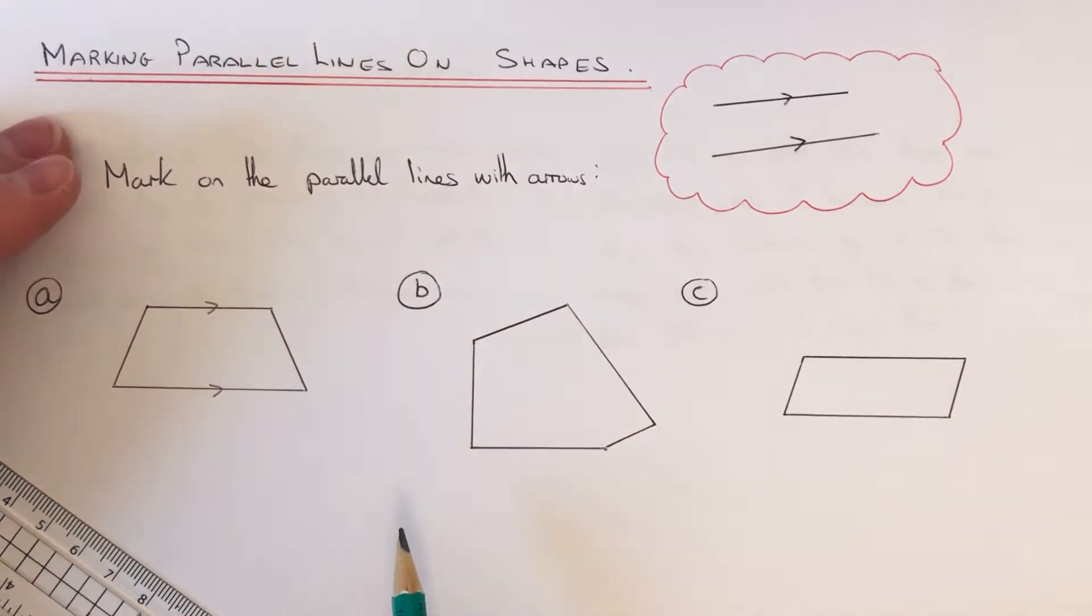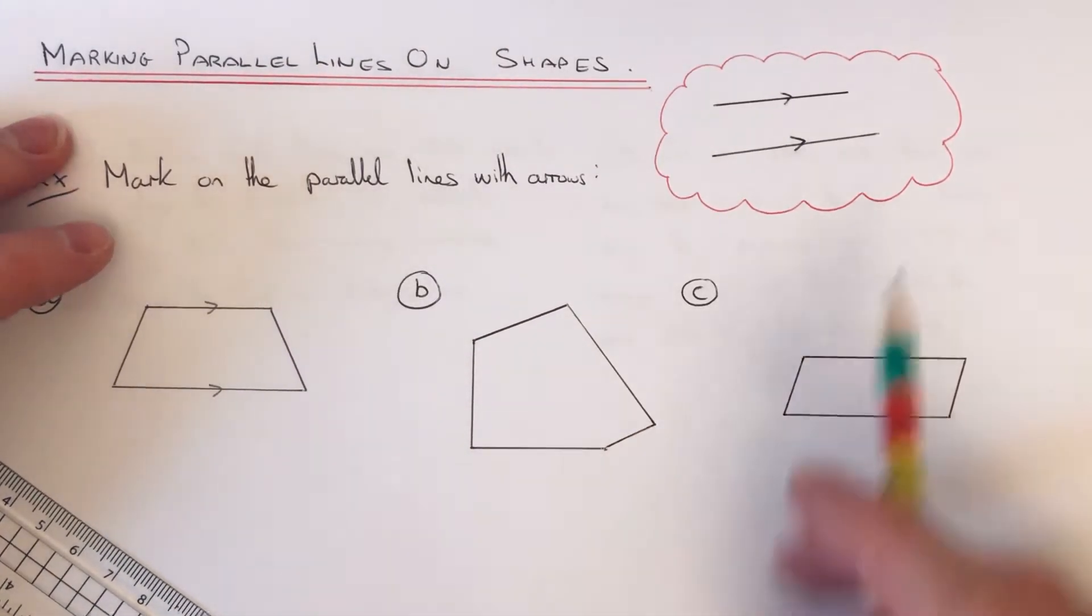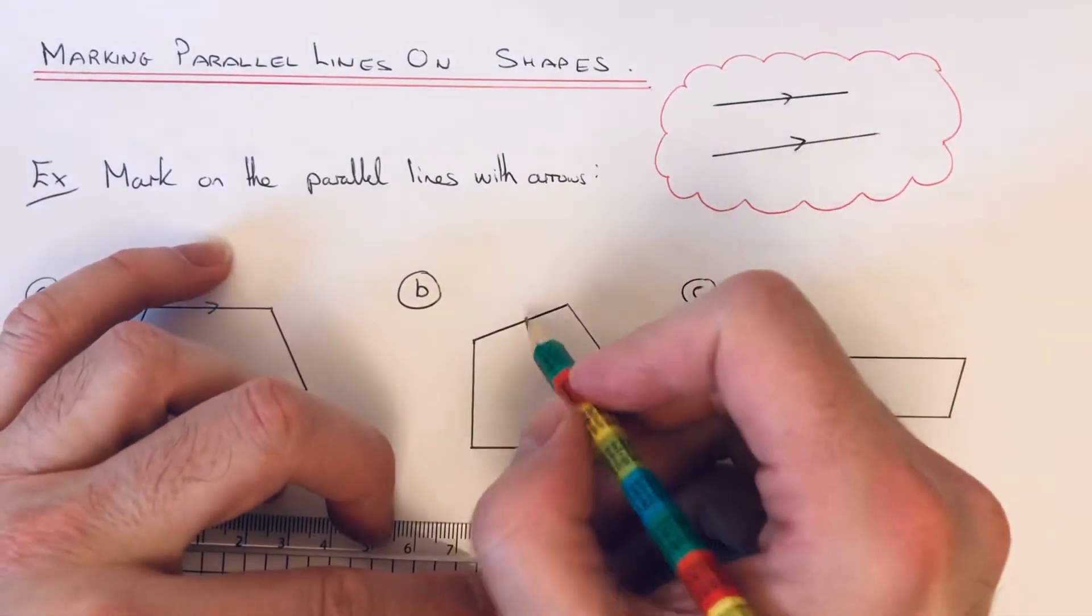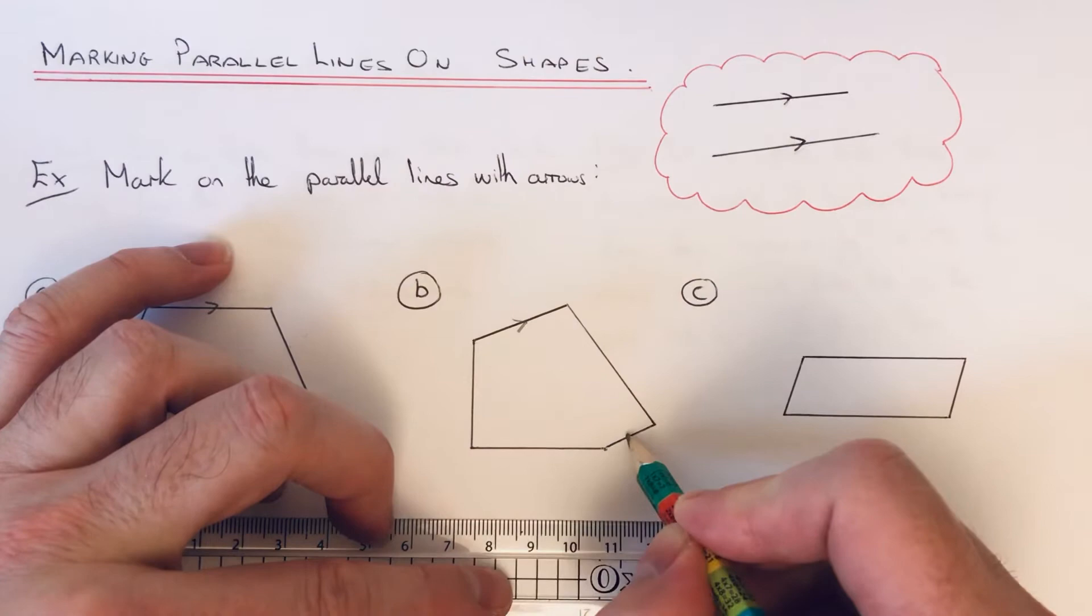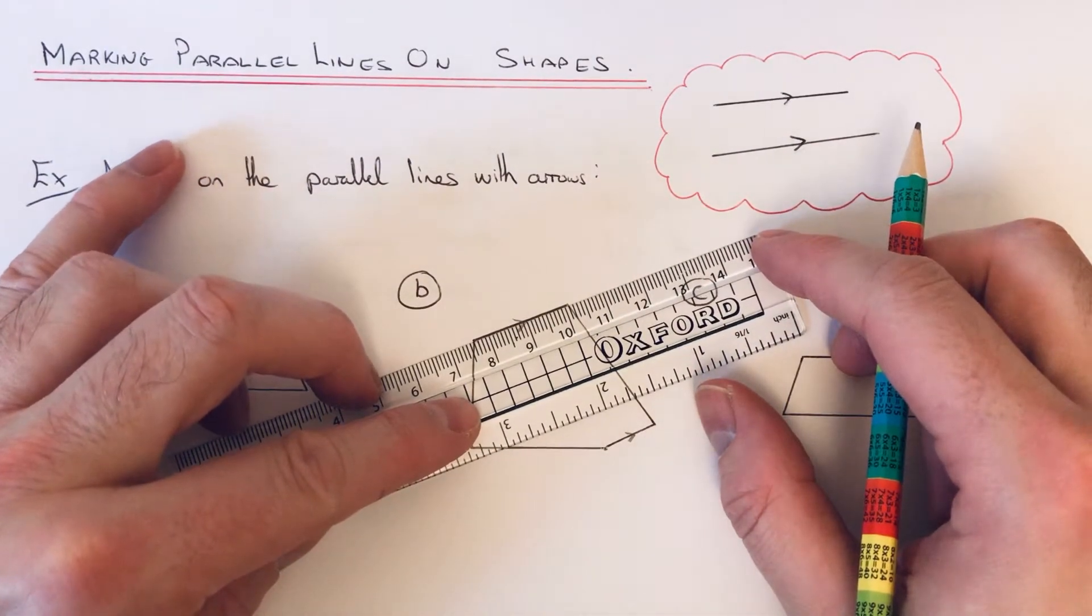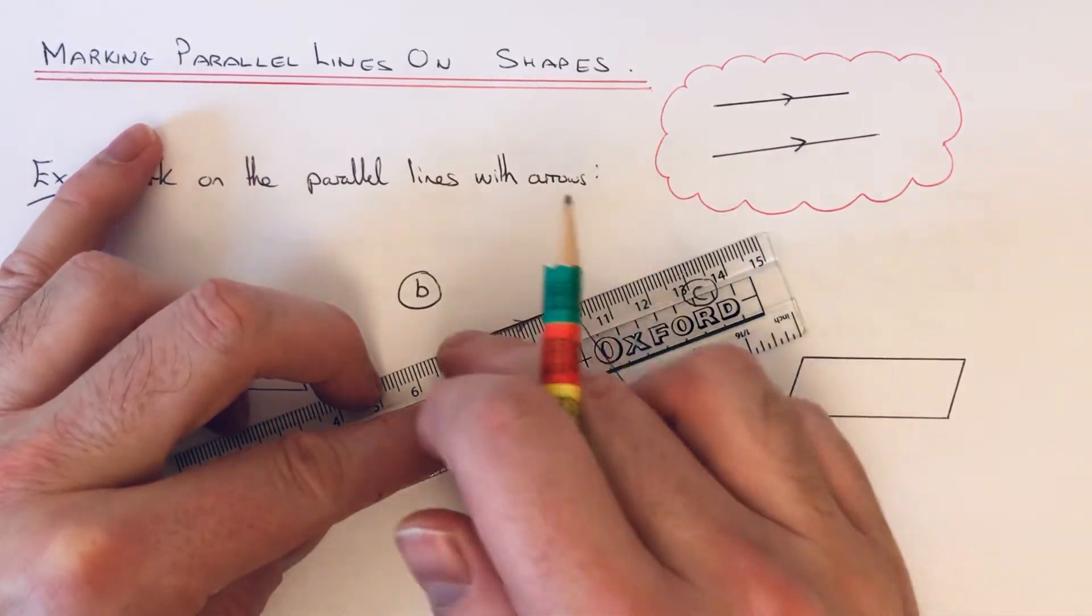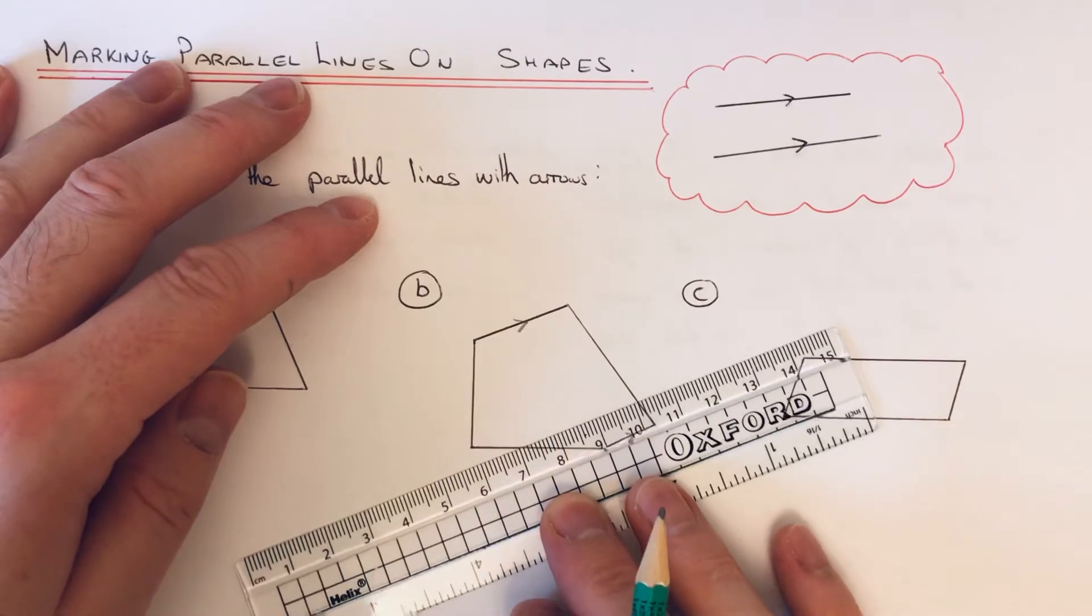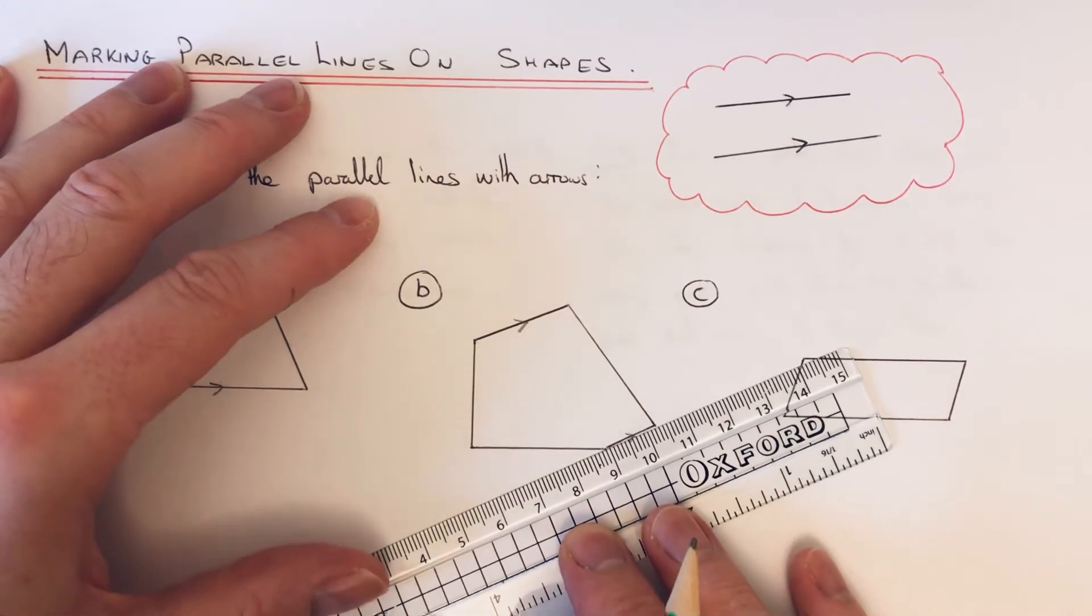This time we have a pentagon. So again, the lines that we're looking for, the parallel lines, are this one and this one. So if I just show you why: if you put your ruler against that line, so it's heading that way, and if I just move it towards the other line, you see it's heading the same way.